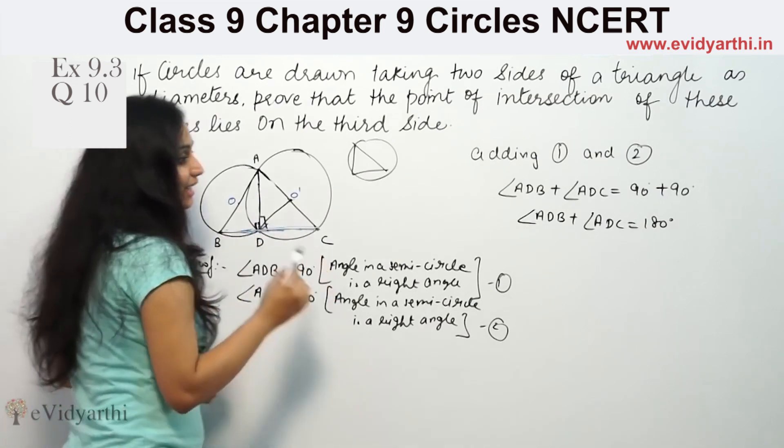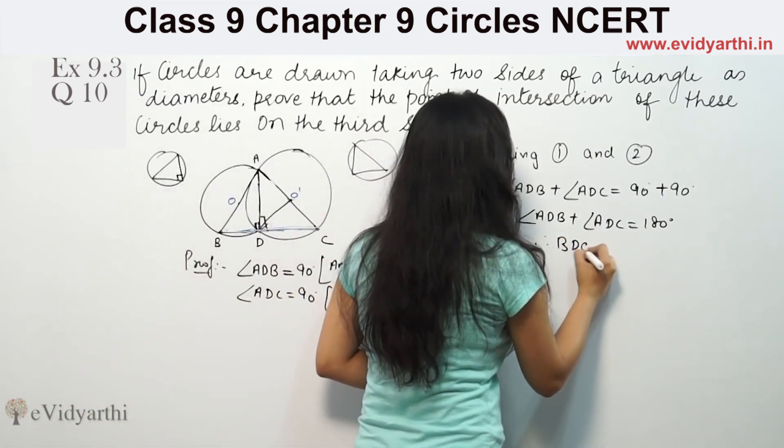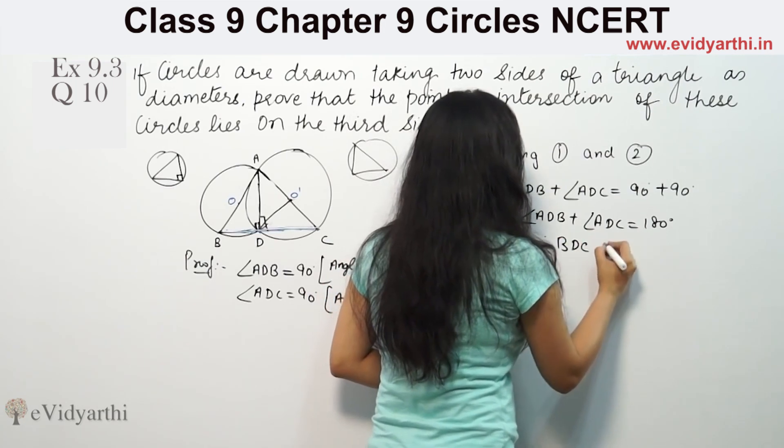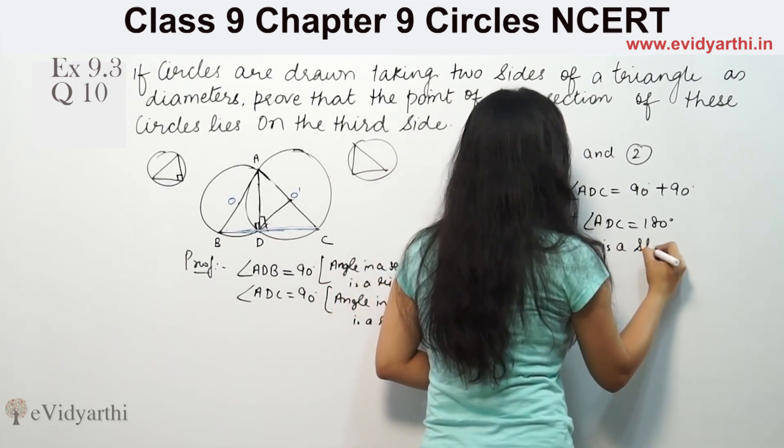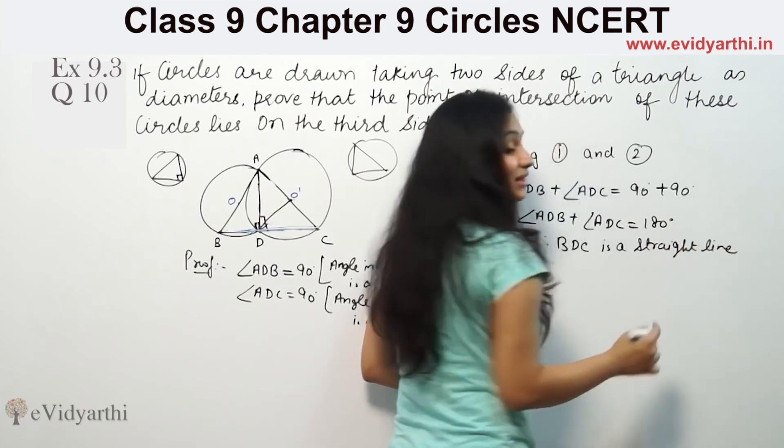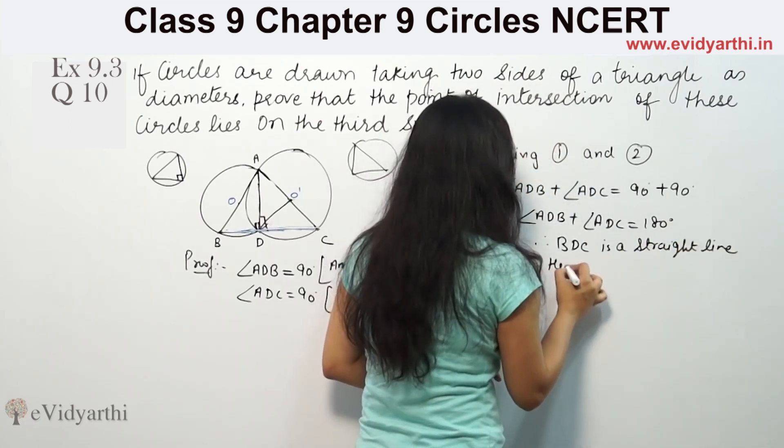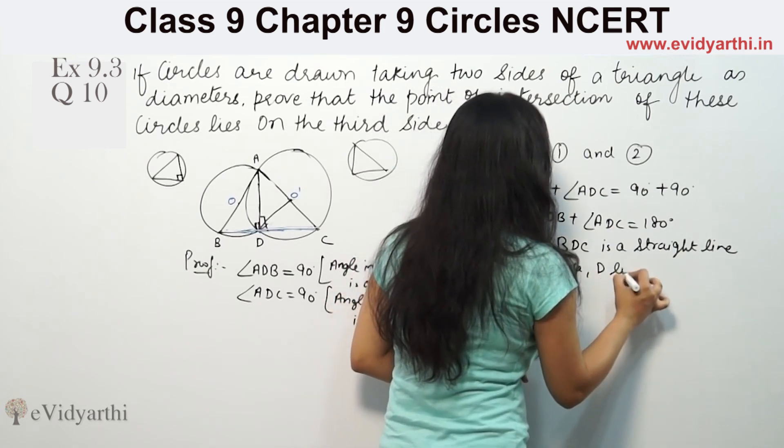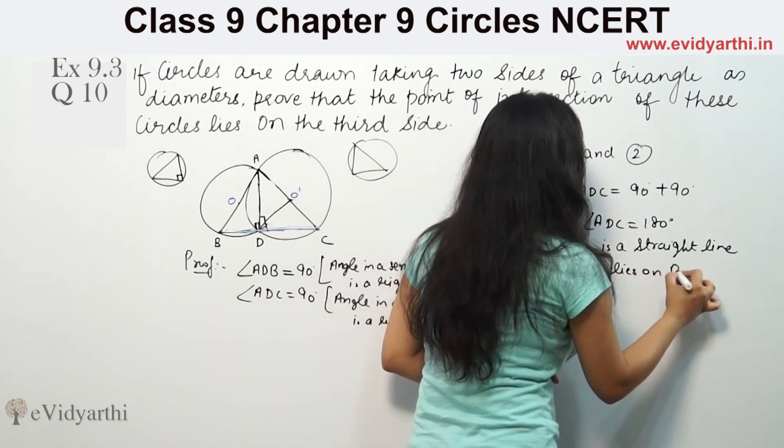This means that these two angles on the left add to 180 degrees, which means it is a straight line. Therefore, BDC is a straight line. Hence, D lies on BC.